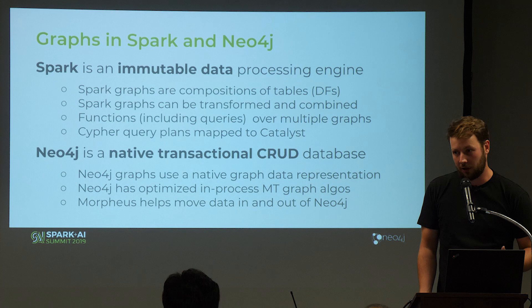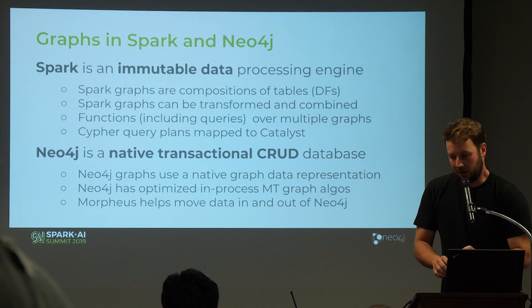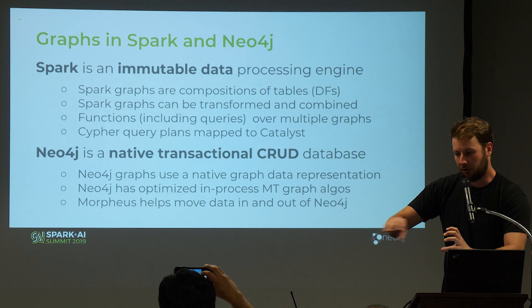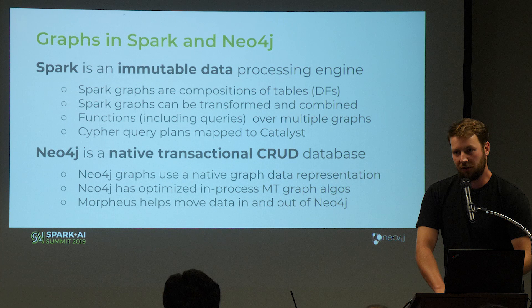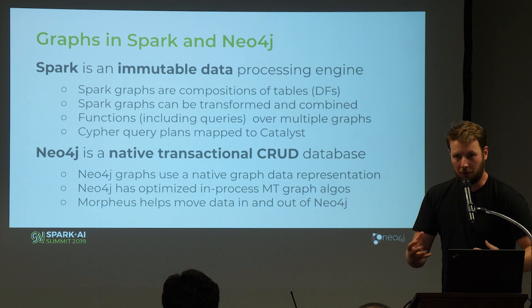Neo4j is a transactional native graph database. Native means it has data structures optimized for graphs. In Spark, when we follow connections between two nodes, we use joins. In Neo4j we use pointers, which is a lot faster. With Morpheus, we try to get data from Spark to Neo4j and back, so that you have a big processing engine but can load into Neo4j to have the full power of graphs.